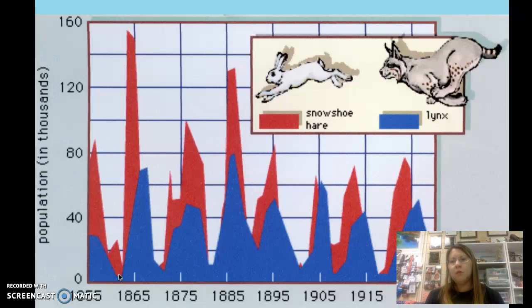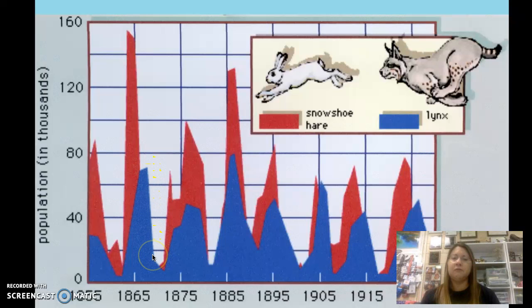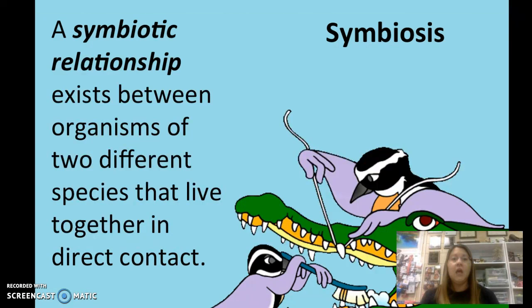Why does the prey population go up, the predator population go up, and then they both start going down? If more food is available, the predator population can reproduce, increasing in numbers. Then there are so many predators that the prey population declines because they're all being eaten. Then the predator population decreases as well because there's not enough food — some are starving or competing and dying. It's like if the cafeteria only has one cheeseburger for 400 students — they'll either fight over it or most won't get to eat.